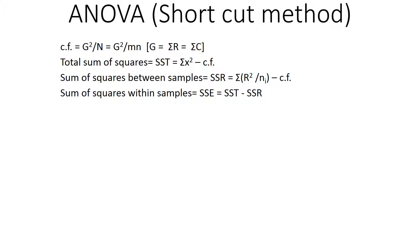Finally, sum of squares within the sample. When you already have SST and you already have SSR, the sum of squares of error or sum of squares within the sample is given by SSE equals SST minus SSR.